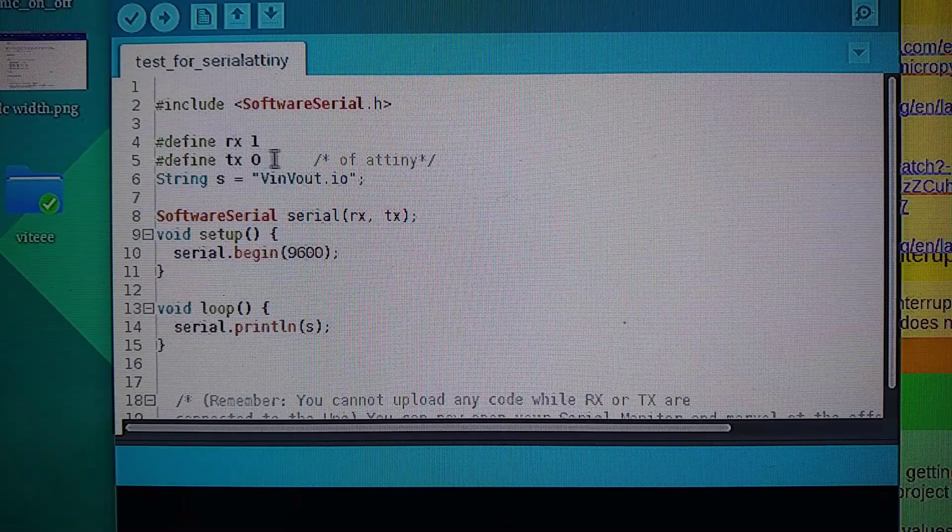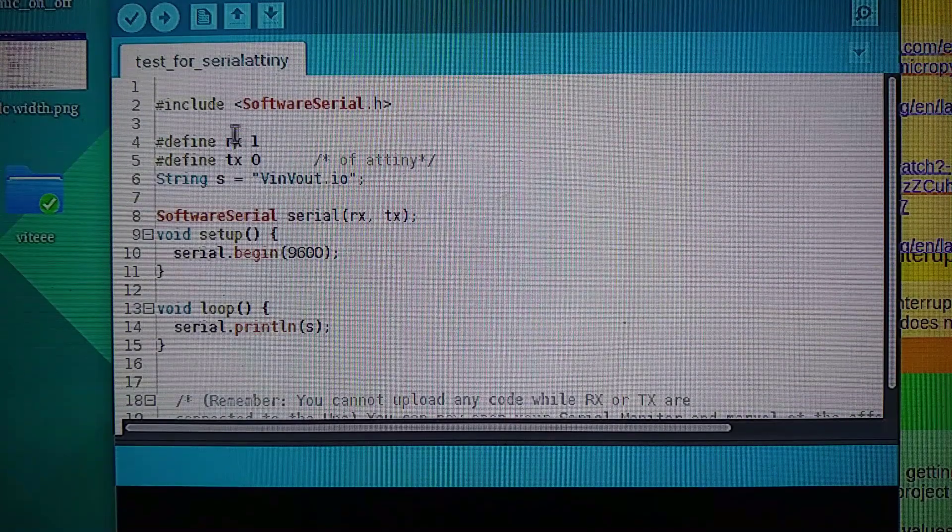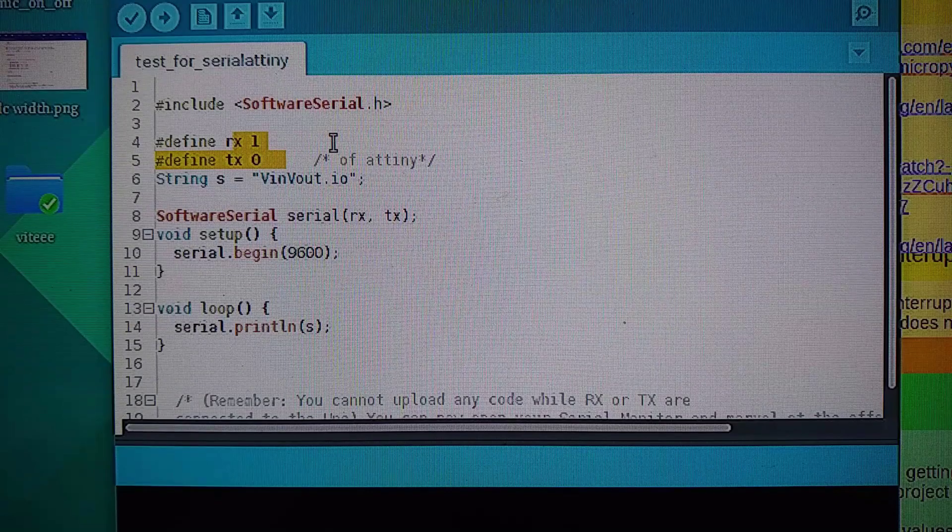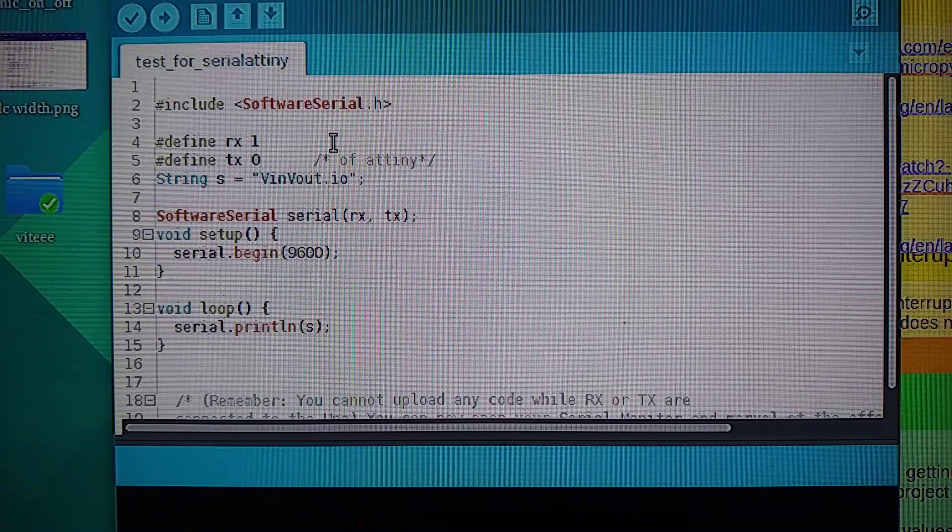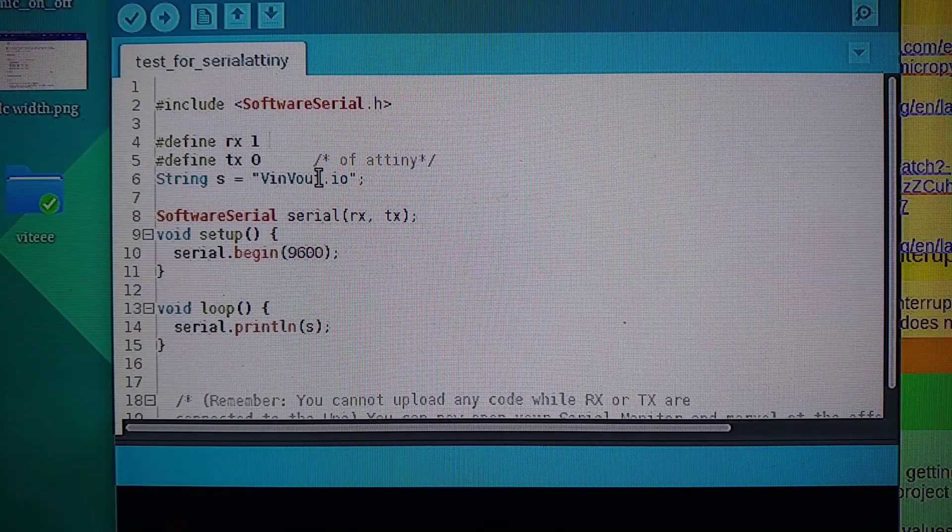And here we are defining the RX and TX pins of the ATtiny. That is, you are going to connect these two pins of the ATtiny to the Arduino's RX and TX pins. So in the code, I am just printing VINVOUT.IO. So let's see the output.